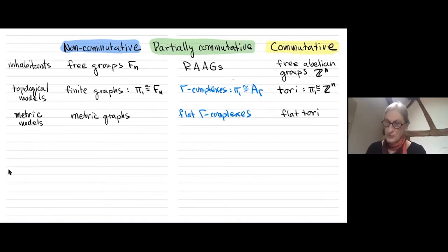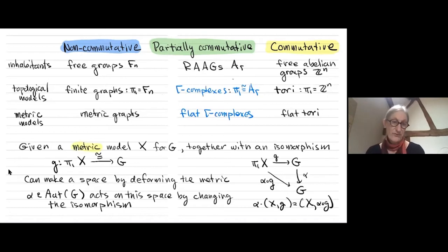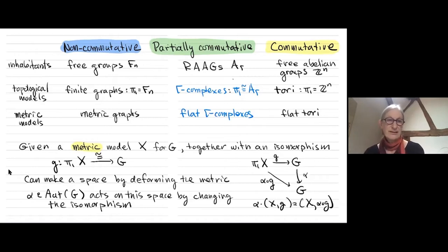What's the point of having a metric model instead of just a topological model? If I have a metric model for my group, I can vary the metric slightly in Gromov's space of metric spaces and get another metric model — I can make a whole space of metric models.